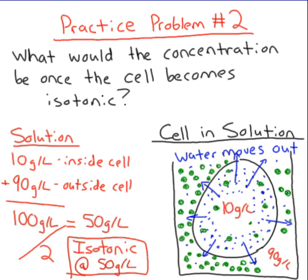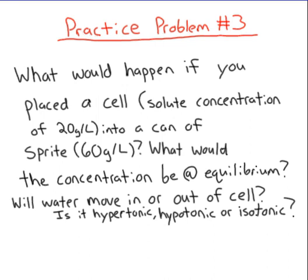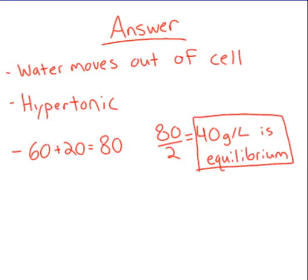The last problem is a bit more in depth, because I want you to identify if it's hypertonic, hypotonic, or isotonic. What would happen if you placed a cell with a solute concentration of 20 grams per liter in a can of Sprite at 60 grams per liter? What would the concentration be at equilibrium? Will water move in or out of the cell? The answers: water is going to move out of the cell because the higher concentration of solute is in the Sprite. That is hypertonic. And we're going to be at 40 grams per liter when it reaches isotonic or equilibrium.